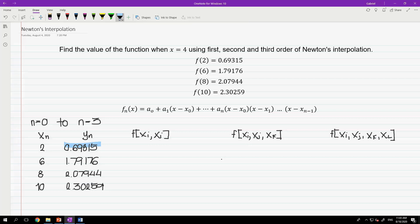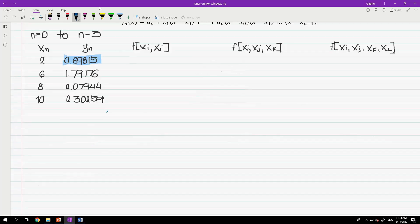For the first coefficient, it is equal to the y-value of the first data point as discussed earlier. So a sub 0 is equals to 0.69315. While for the second coefficient, it is equals to the difference of these terms divided by the difference of these terms. So a sub 1 is equals to 1.79176 minus 0.69315 all over 6 minus 2. And that is equals to 0.27465.